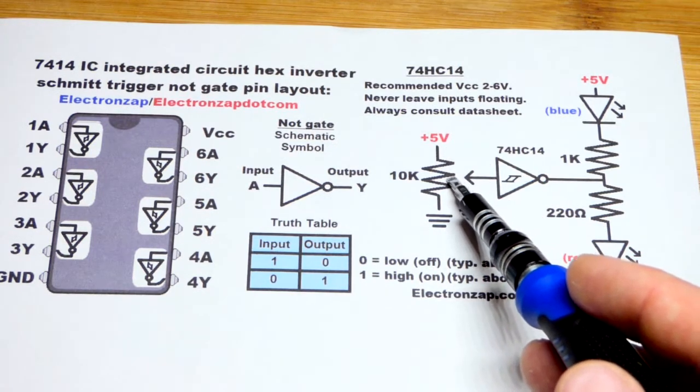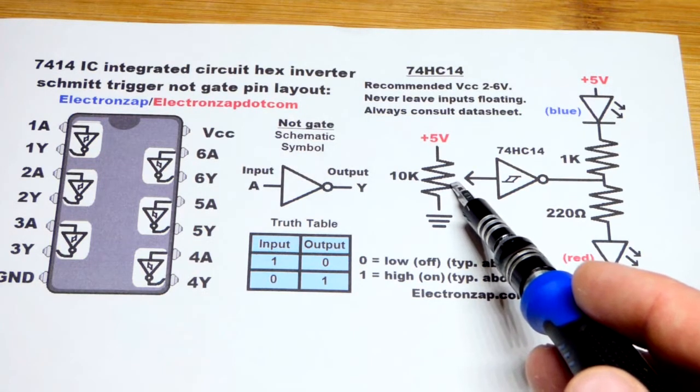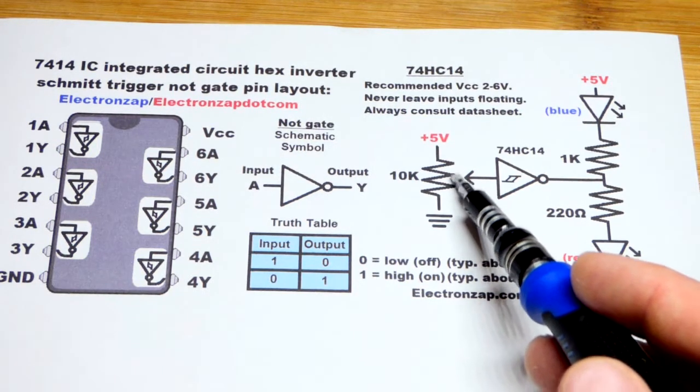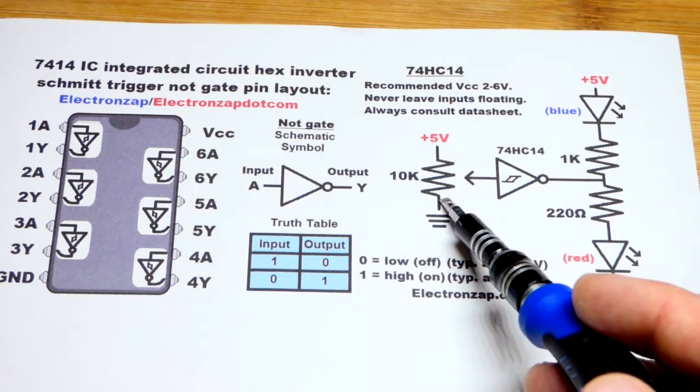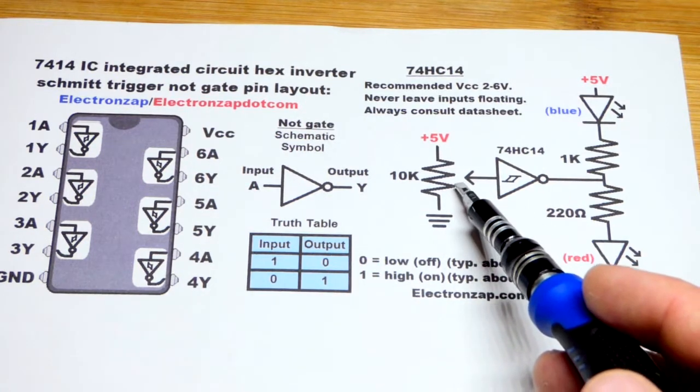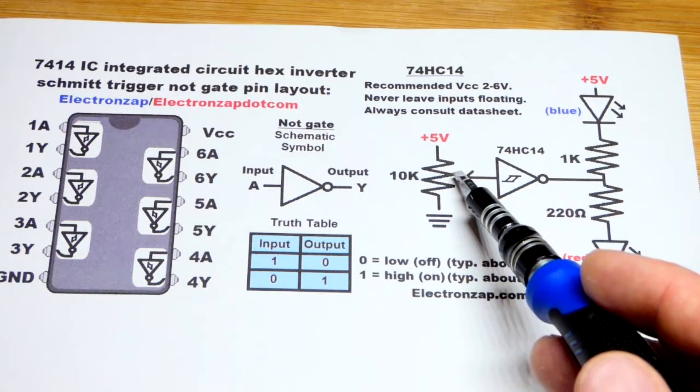When you drop it down, it's going to stay high until you get to about a third of the supply voltage. Then it's going to go low and stay low until you get about halfway up again.